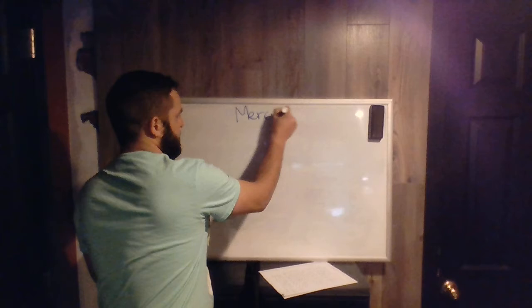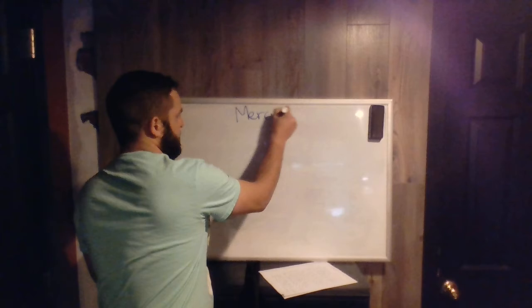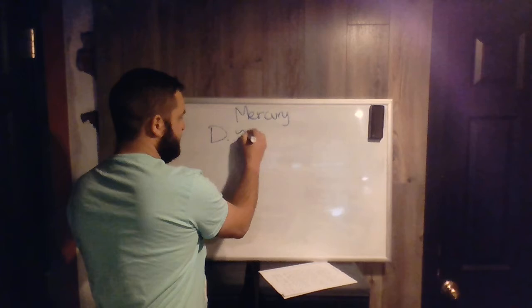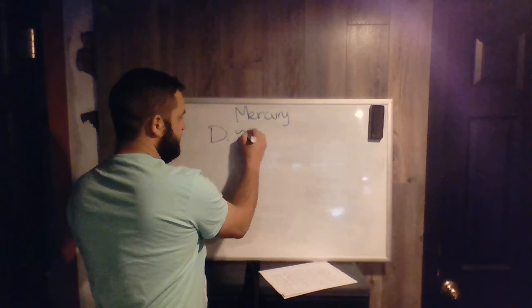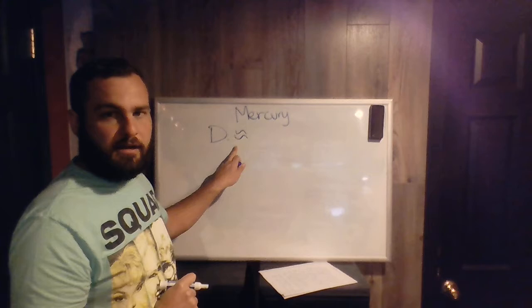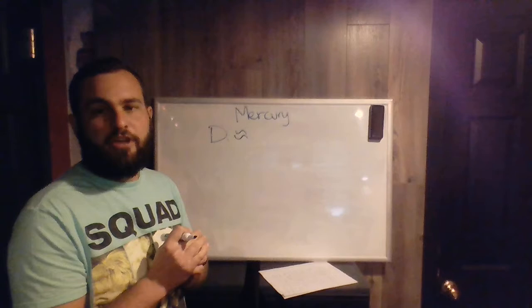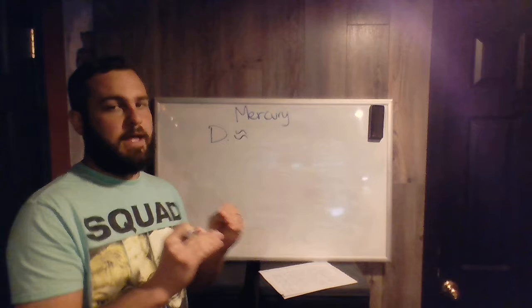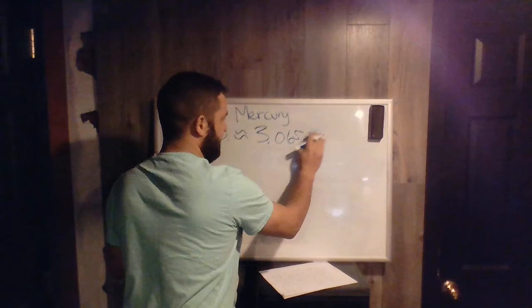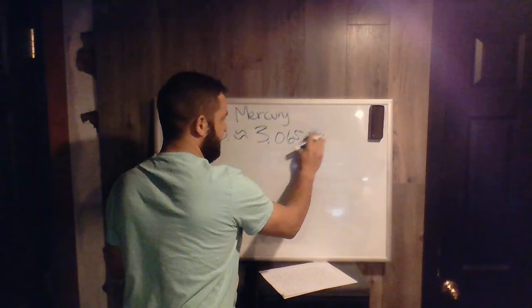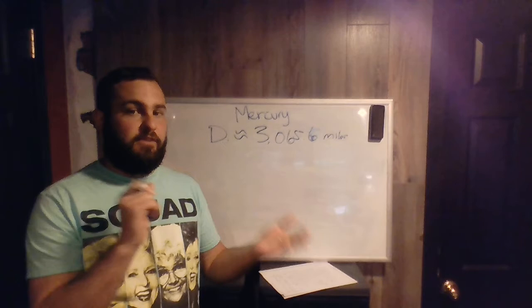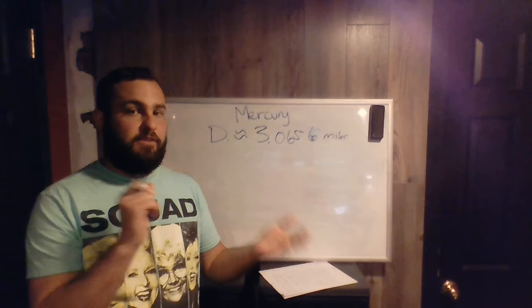The first thing I wanted to talk about is Mercury — the very first and closest planet in our solar system. We already know some really interesting facts about Mercury, and that is that the diameter of Mercury is about 3,065 miles. Remember when we use these little squiggly signs, it represents an approximate number because things can change in science. Now that is Mercury. It's the second smallest planet in our solar system, second to Pluto. So it's a pretty small planet.